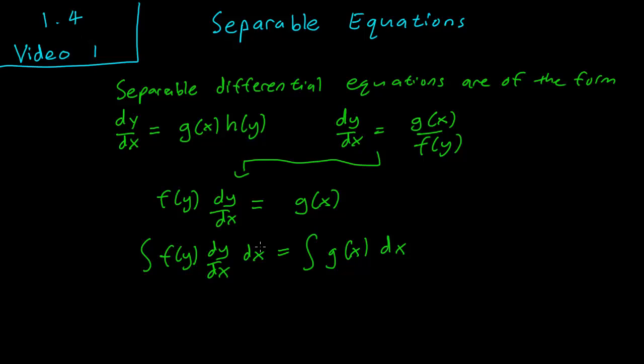So we can see that the notation here suggests that we can cancel out the dx's from the top and the bottom here. And we indeed can. The real reason why we can do this is a bit more complicated, but I'm not going to go into that. So we have f(y) dy equals g(x) dx.